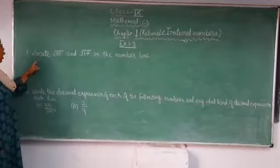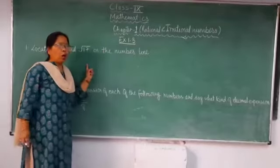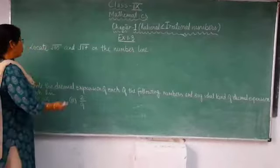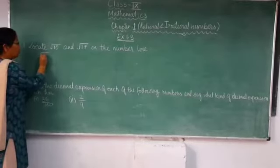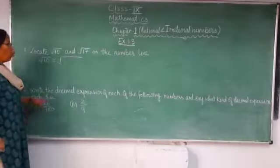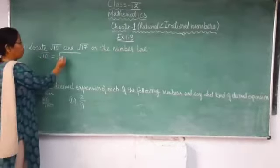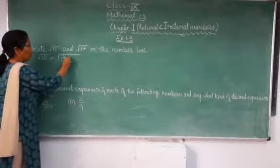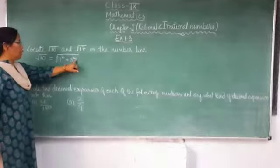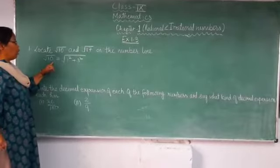Question number 1 is: locate √10 and √17 on the number line. You will know how to make a number line, but here the number line is something different. We will write down √10. We have to think of two numbers whose sum of squares is equal to 10. So 10 can be divided as 1² + 3², because 1² is 1 and 3² is 9, so 9 + 1 = 10. We have to locate √10 on the number line.